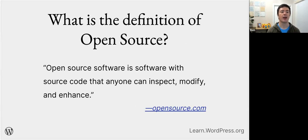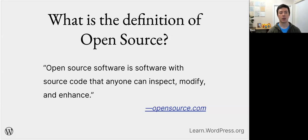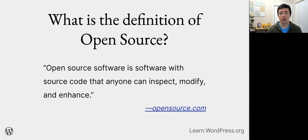So what is open source? Open source is software with source code that anyone can inspect, modify, and enhance. Open source is where the source code — the code behind a piece of software — is open and free for anyone to look at, change, and modify to meet their needs.